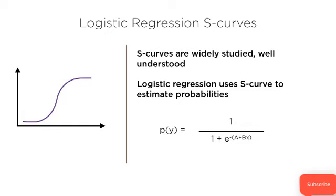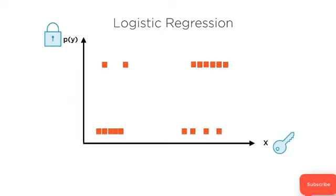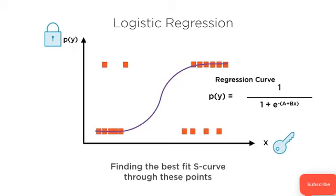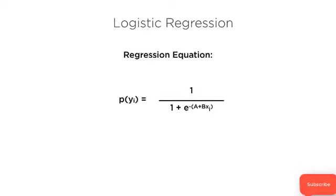How does this apply to classification models? The outcome predicted by your logistic regression model is the one which has the highest probability score. You have a bunch of training data points, and what logistic regression tries to do is fit an S curve on your data. When you train your logistic regression model, you're trying to find the best fit S curve through all of these points. The whole objective of training your logistic regression classification model is to find the best values of A and B in the formula.